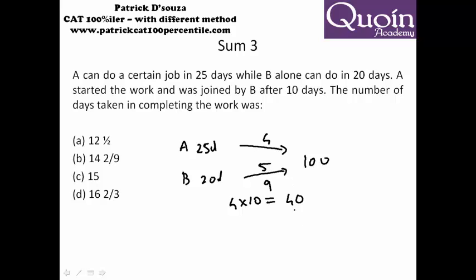So to complete remaining 60 work, they will take 60 upon 9 days, which will be 20 upon 3 or 6 2/3 days. So total days will be 16 2/3, the first 10 days and the next 6 2/3 days.